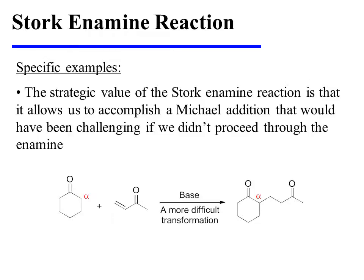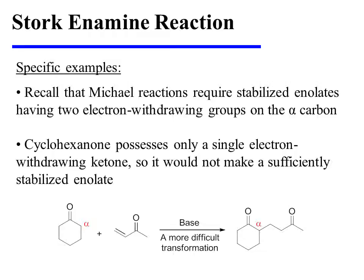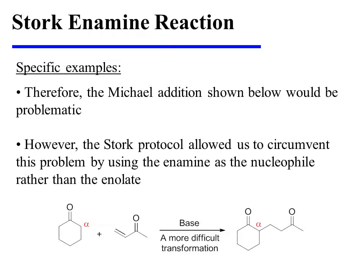The strategic value of the Stork enamine reaction is that it allows us to accomplish a Michael addition that would have been challenging if we didn't proceed through the enamine. Recall that Michael reactions require stabilized enolates having two electron withdrawing groups on the alpha carbon. Cyclohexanone, however, possesses only a single electron withdrawing ketone, so it would not make a sufficiently stabilized enolate. Therefore, the Michael addition as shown here on this slide would be problematic. However, the Stork protocol allowed us to circumvent this problem by using the enamine as the nucleophile rather than the enolate.